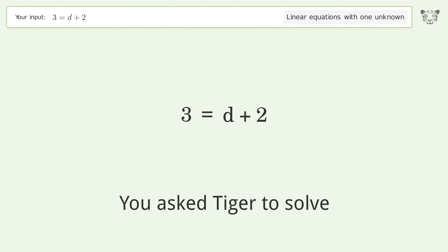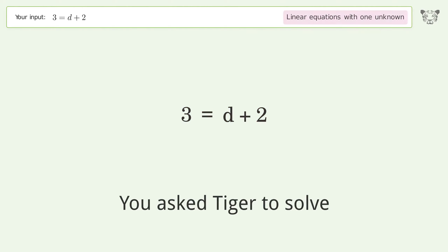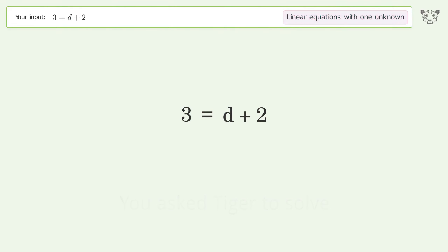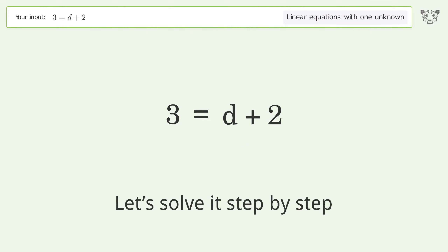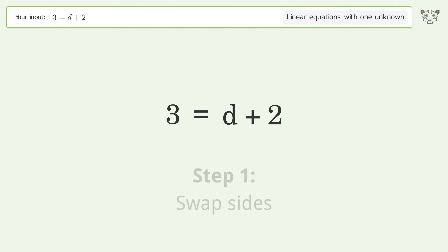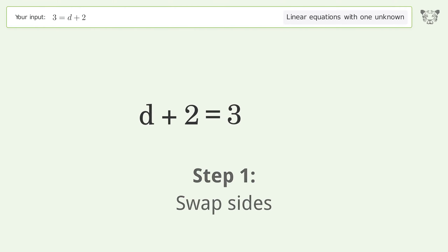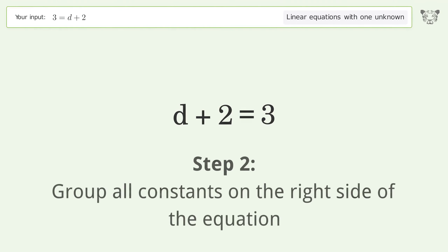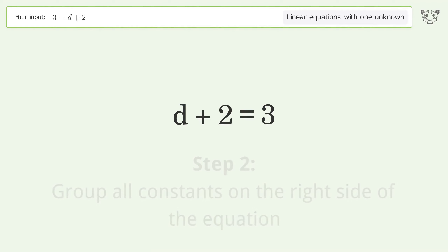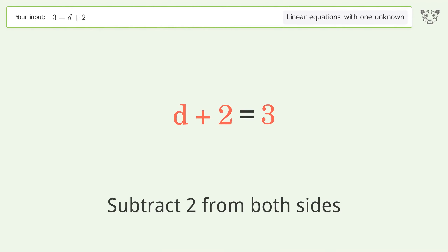Tiger is asked to solve a linear equation with one unknown. The equation is 3=d+2, and the final result is d=1. Let's solve it step by step: swap sides, group all constants on the right side of the equation, then subtract 2 from both sides.